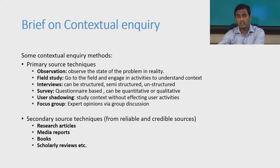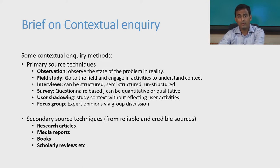Research articles, media reports, books, and scholarly reviews are also sources of secondary techniques, which are widely used when the information you are looking for already exists as known knowledge, but you need to look for credible and reliable information.